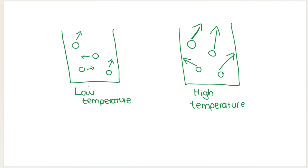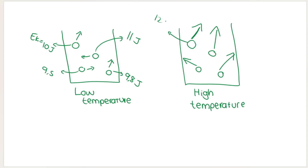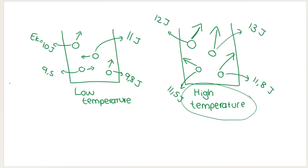What happens if I increase the temperature? In situation one, this particle has a kinetic energy of 10 joules, this one 9.5, this one 11, this one 9.8 joules. If I increase the temperature, I am increasing the average speed and average kinetic energy of all the particles. So they'll all increase — this one is now 12, this one 13, this one 11.8, this one 11.5 joules. On average, all particles have a higher kinetic energy at higher temperature.